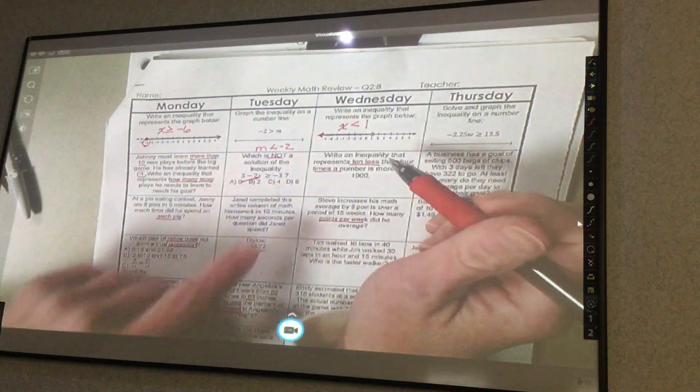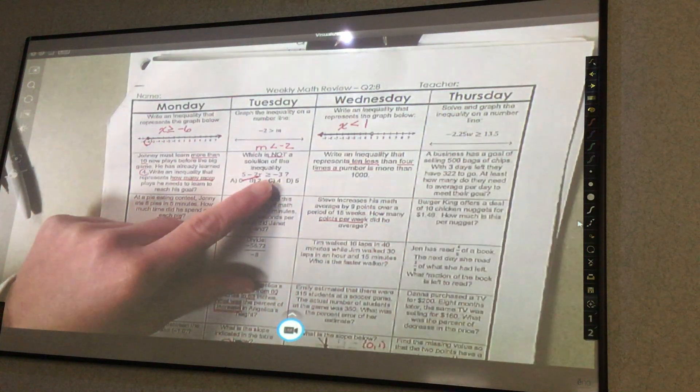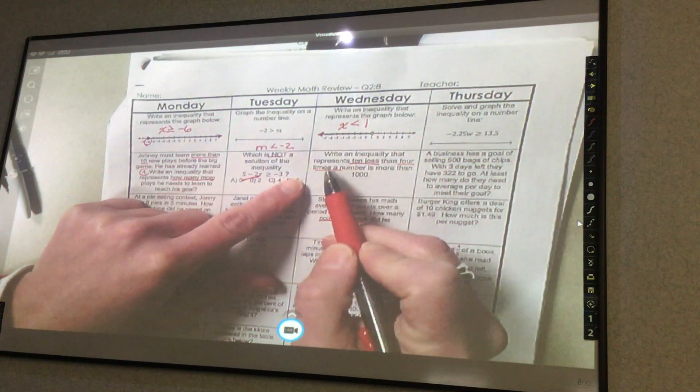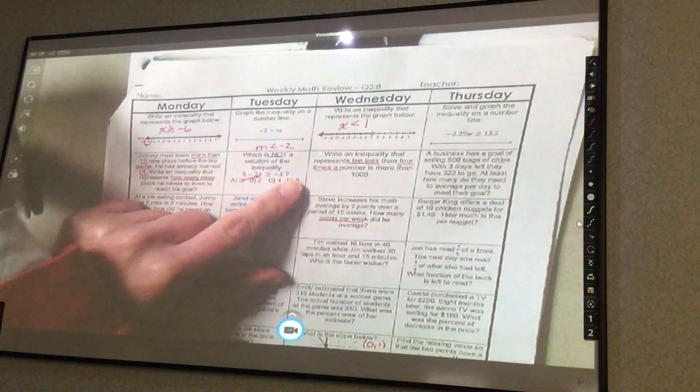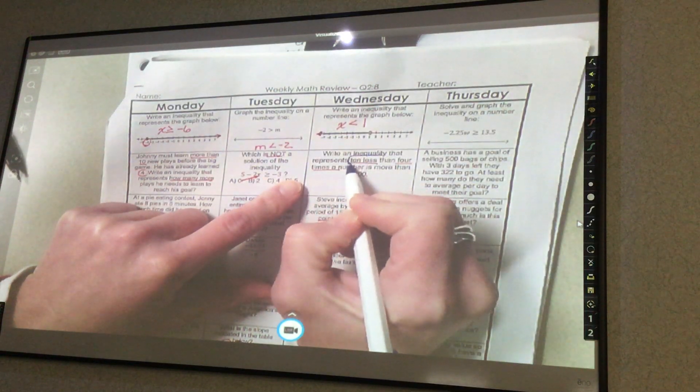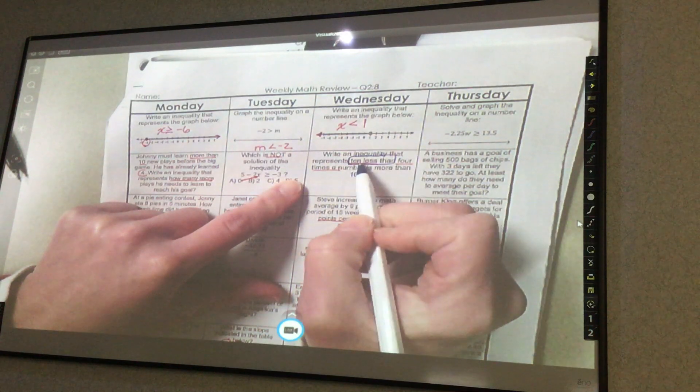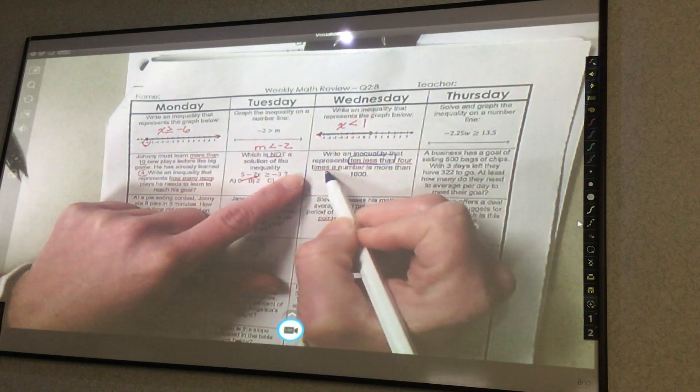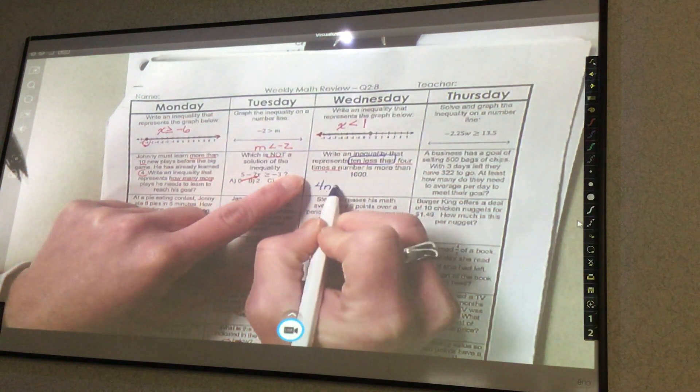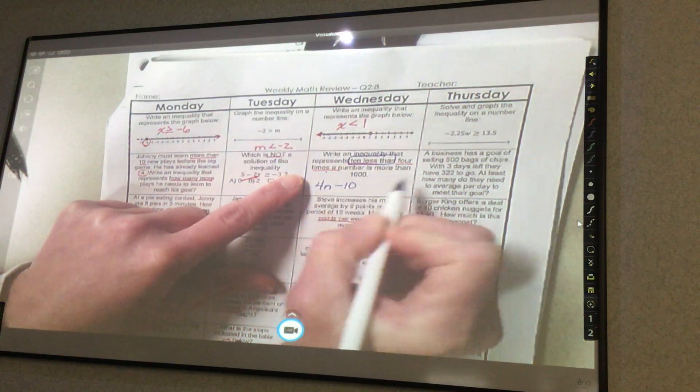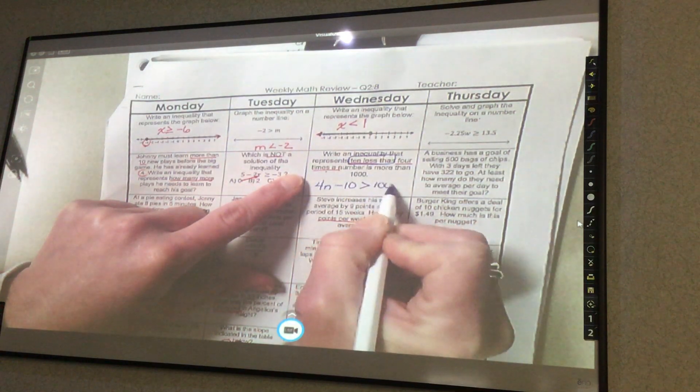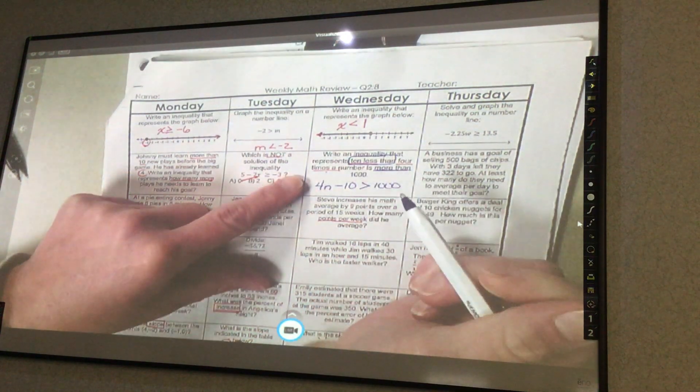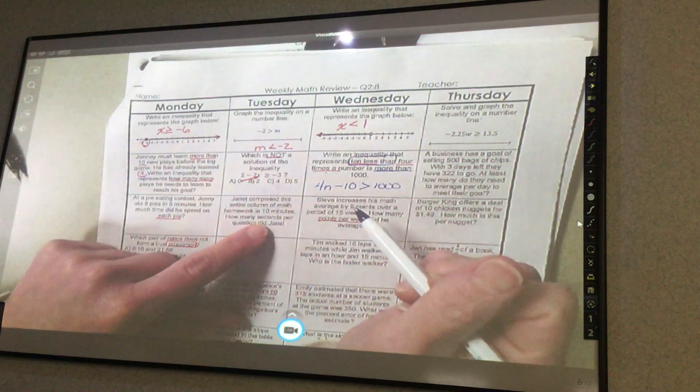When you're writing inequalities, or even if it's just asking you to write an equation, order does matter, and this is one that tricks people a lot. Write an inequality that represents 10 less than, that's the important part, less than 4 times the number. So 10 needs to be less than this. So 4 times the number actually has to be written first. So I have to do 4 times the number, and then 10 less than that, and it needs to be more than 1,000, so it has to be greater than 1,000. And it cannot be equal to because it says it needs to be more than. So if you had 10 first, it would not be correct.